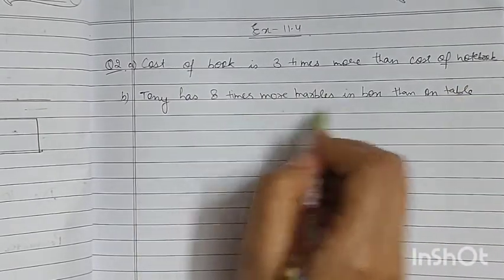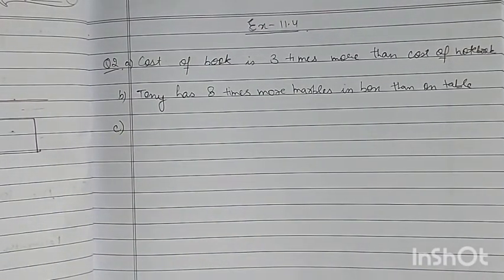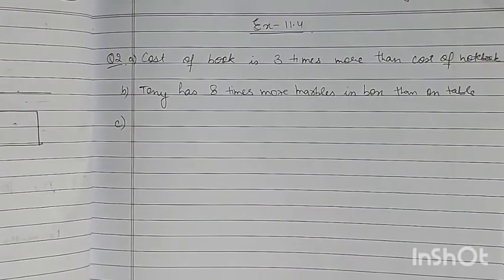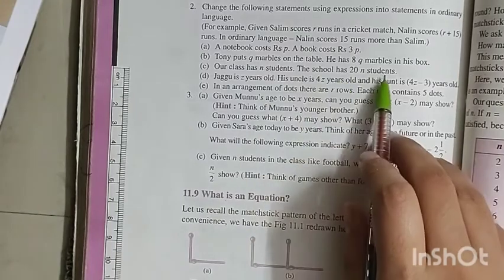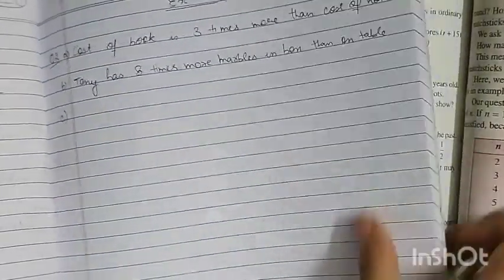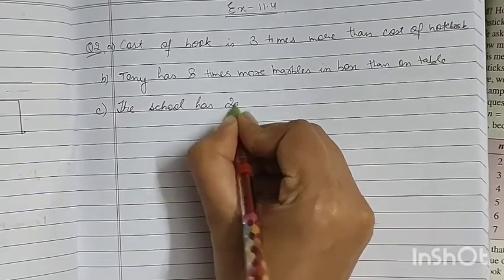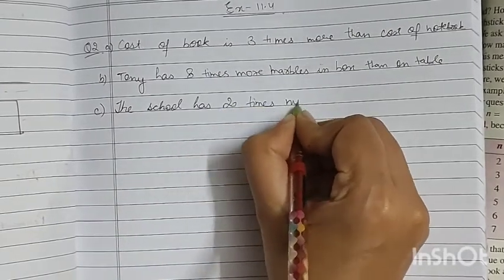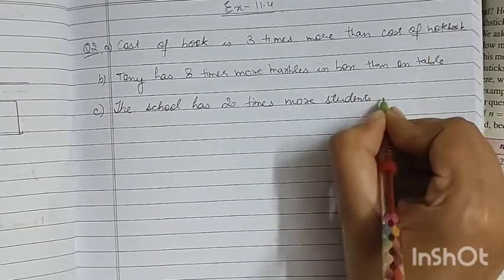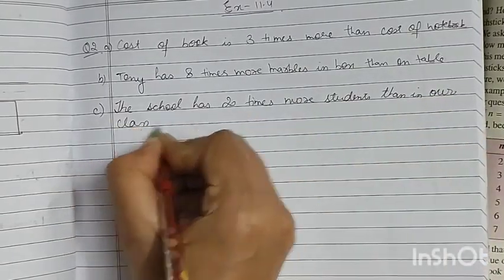You don't have to write exactly this statement — you can write any statement that seems easy to you. Next: our class has N students, the school has 20N students. So we write: the school has 20 times more students than in our class.